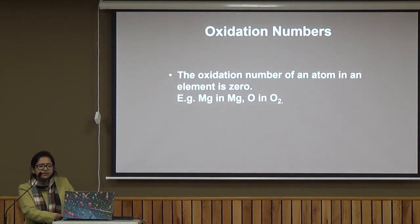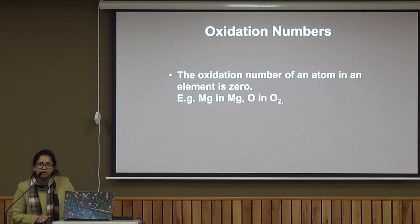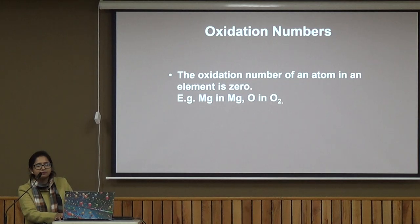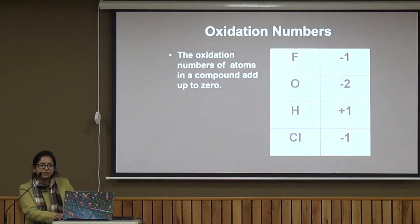Here are the standard oxidation numbers of some elements: fluorine is minus 1, oxygen is minus 2, hydrogen is plus 1, and chlorine is minus 1.